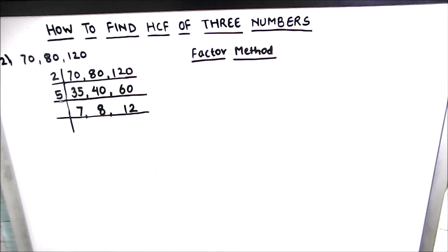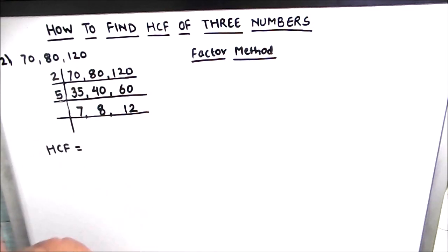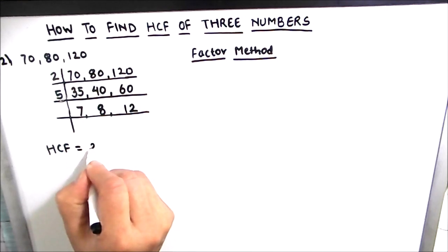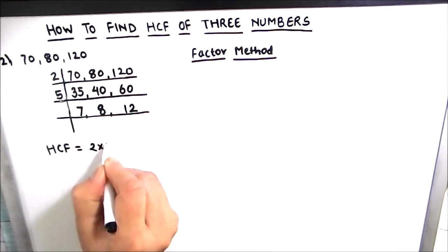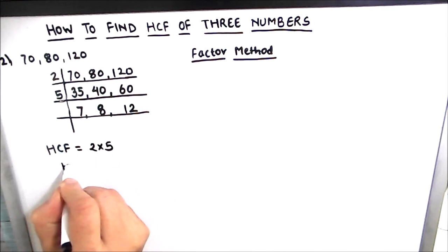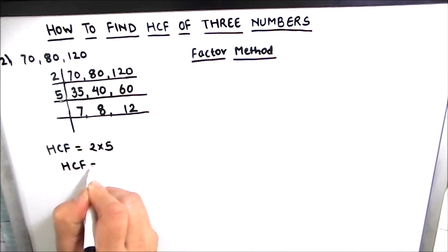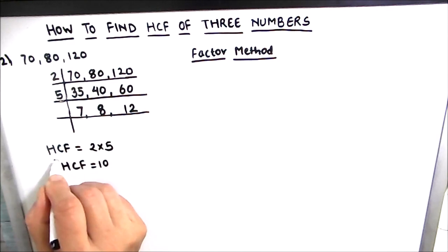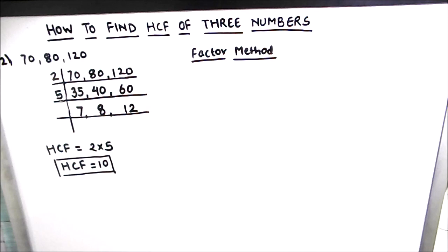We are left with 7, 8, and 12, and there is no single common factor of these three numbers. So we stop the division and take the product of the numbers on the left-hand side of the ladder. The HCF is 2×5=10. So 10 is the highest common factor of 70, 80, and 120.